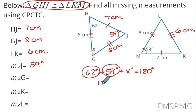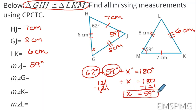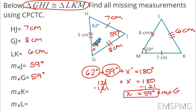Next is angle G. Angle G is the first vertex in the first triangle, so it would match with L. But I look at L and I have nothing — I'm getting stuck. You have to ask yourself: what else do I know about triangles? I only have one angle measurement and I've already used it. If you recall the Triangle Angle Sum Theorem, it states that if I add all three angles of a triangle, I will get 180 degrees. So I'm going to go ahead and use that here.